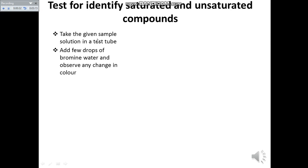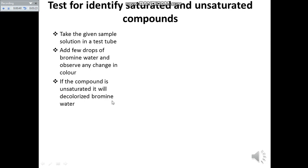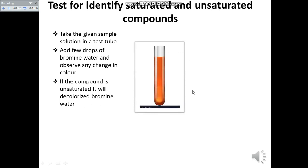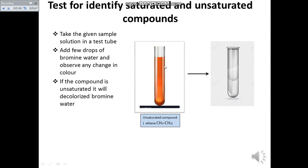Observe any change in color. If the compound is unsaturated, it will decolorize the bromine water — the bromine water will lose its color. If the sample solution is saturated, it will not decolorize the bromine water, because saturated compounds already have single bonds and do not react with bromine water.